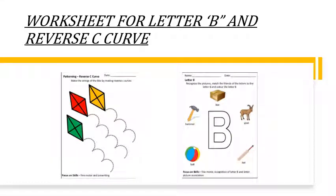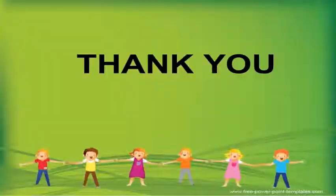After listening to the story, parents, you can give these worksheets to the children. One worksheet is for letter B, and the other one is for the reverse C-curve pattern. Parents who have access to the Parent Connect app will find this worksheet under the resource tab. Parents who don't have access to the app can simply draw this worksheet on paper. Thank you, have a nice day.